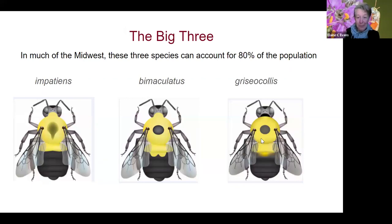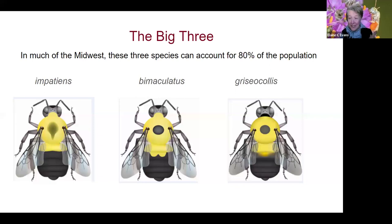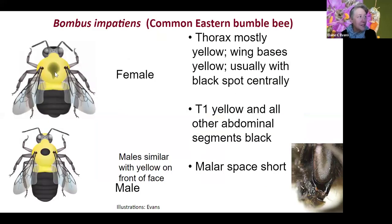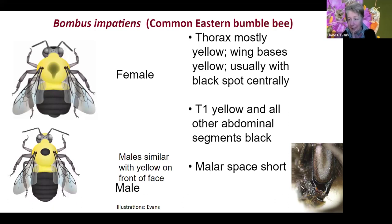For figuring out bumblebees, I'll start with the 'big three.' Throughout the midwest, around 80% of the bumblebees you see will be one of these three species: Bombus impatiens (the common eastern bumblebee), Bombus bimaculatus (the two-spotted bumblebee), and Bombus griseocollis (the brown-belted bumblebee). For the common eastern bumblebee, look for two features: the thorax is mostly yellow, and on the abdomen only the first segment is yellow while the rest is black. I have a link to a PDF guide to Minnesota bumblebees on the Bee Lab website that will be shared.